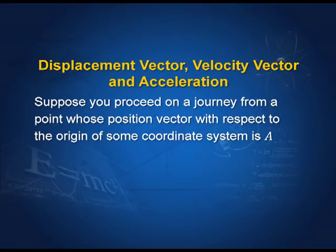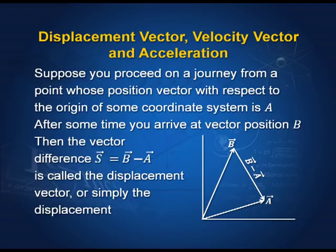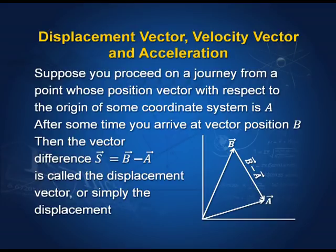Suppose you are at point A, whose position is given by vector A from the origin to where you are located. After some time, suppose we reach position vector B. Then the difference between B and A is known as the displacement vector. Both vector A and vector B are our positions with respect to a certain coordinate system. The difference between the final position and the initial position is the displacement vector B minus A. So the displacement vector, denoted by capital S, is equal to vector B minus vector A.